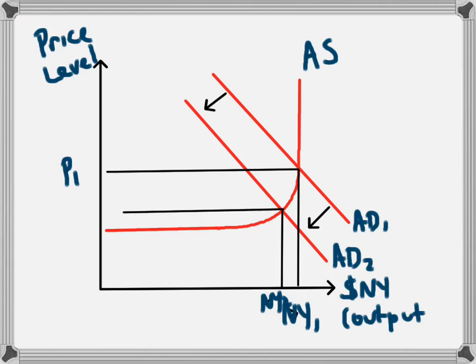The reason why the government may have been willing to do this would be that there was a problem with inflation in the economy. By doing this, price levels decrease from P1 to P2. There is less demand for the resources that are available, which drives down the cost of those resources, and businesses are able to produce a lower amount of products and have reduced their prices because of that.